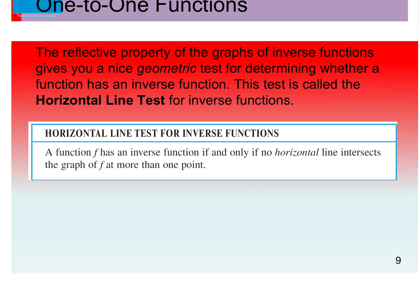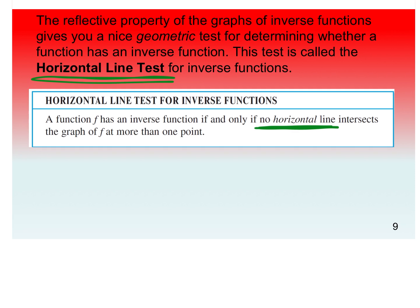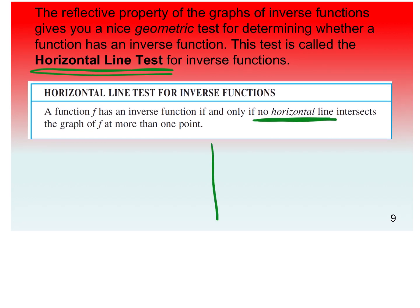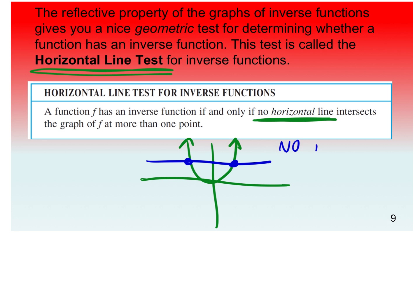Not every function has an inverse. To tell if a function has an inverse, you do the horizontal line test. A function f has an inverse if and only if no horizontal line intersects the graph of f at more than one point. So if I had a parabola and I put a horizontal line through it, it intersects at two points — so this function has no inverse.